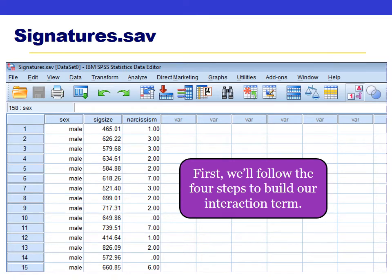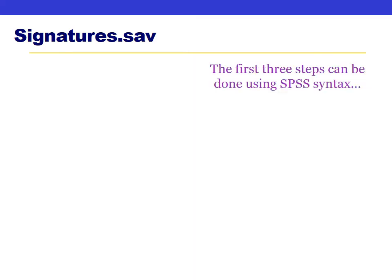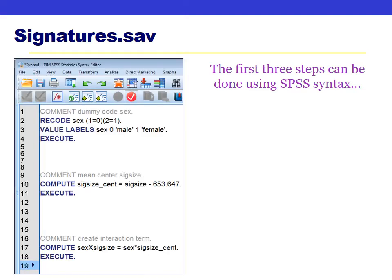There are four steps to test the interaction between sex and signature size predicting narcissism, and the first three can be done using syntax. Step one is to ensure the categorical variable — sex — is dummy coded correctly. When you open this file, men are coded as one and women as two, so we need to recode: anyone with a one becomes a zero, anyone with a two becomes a one, and we update the labels accordingly.